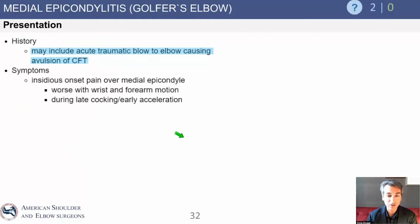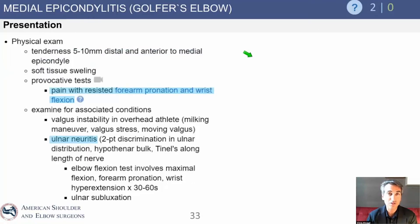The presentation can include an acute traumatic blow causing an avulsion — this is not classic epicondylitis but is in the genre of medial forearm muscle injury. We can call it a flexor pronator strain or flexor pronator avulsion. It has a very similar examination: tenderness distal and anterior to the medial epicondyle, possible soft tissue swelling, and classic resisted pain with forearm pronation and resisted flexion. I use this as my go-to exam in the office on a very regular basis.